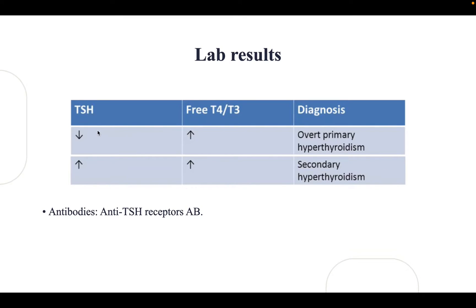For the lab results in primary hyperthyroidism, there is a problem in the gland itself, so T3 and T4 will be high. Since they down-regulate TSH, TSH will be low. In secondary hyperthyroidism, there is a problem in the pituitary gland, so there will be too much TSH release — TSH will be high — and since TSH stimulates T3 and T4, these will also be high.